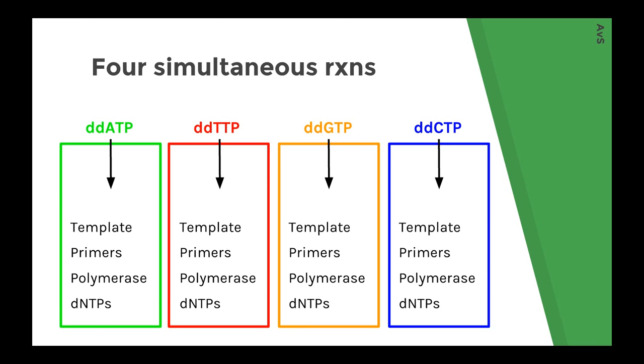Now, I'm going to go over how we would collect data if we were using radiolabeled ddNTPs with radioactive phosphorus attached. What you have to do first is separate the materials into four separate reactions. These are going to happen simultaneously, and the only difference between these reactions is the ddNTP added. So, one would have a dideoxynucleotide version of adenine, another one would have one of thymine, another one with guanine, and the final with cytosine. Every single reaction is going to have the template DNA, the amplified template DNA, primers, polymerase, and normal dNTPs. The only difference is the ddNTP that was added.